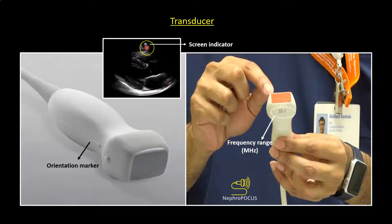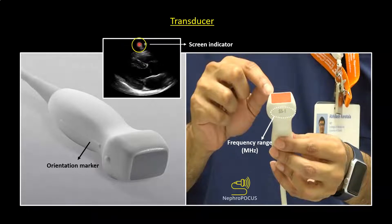The screen indicator or the orientation marker is on the right in cardiac preset, as opposed to abdomen preset and vascular preset where it is on the left side, but regardless it still corresponds to the orientation marker on the probe and it depends upon in what direction you are holding the probe.